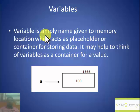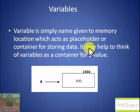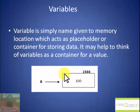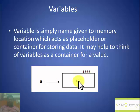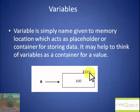First of all, what are variables? A variable is simply a name given to a memory location, which acts as a placeholder or container for storing data. A variable has a name, a value, and an address. Just like houses have addresses, every variable also has an address in memory — a unique memory address or location number.